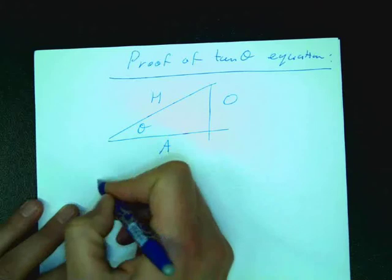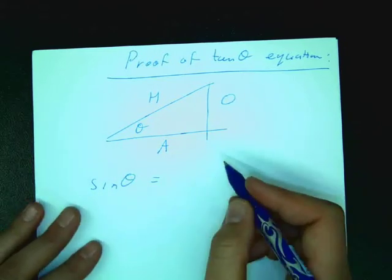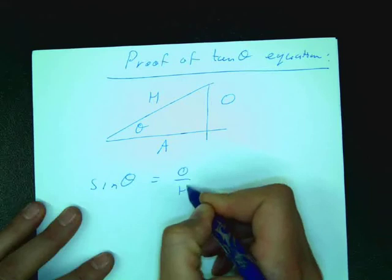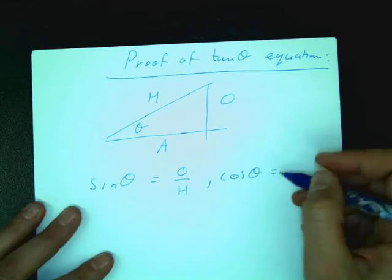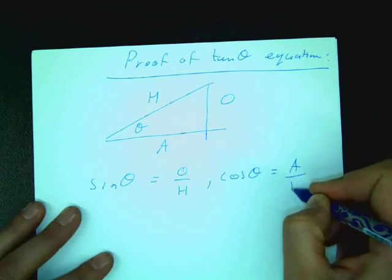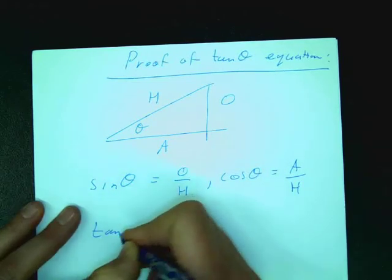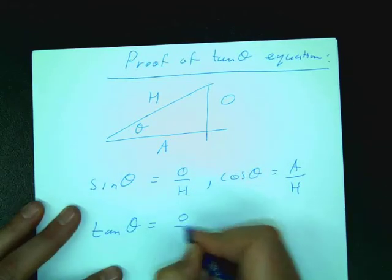So sine of theta is equal to what? Opposite over h. O over h. Cos of theta. Tan of theta. O over a.